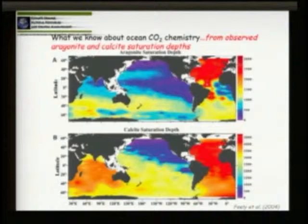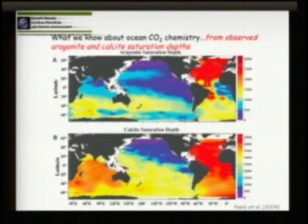Along our coast of Washington, Oregon, and California, and in South America, the corrosive water is abutting right against the continental shelf. So any changes to the circulation and upwelling of water onto the surface will cause this corrosive water to come onto our continental shelf.